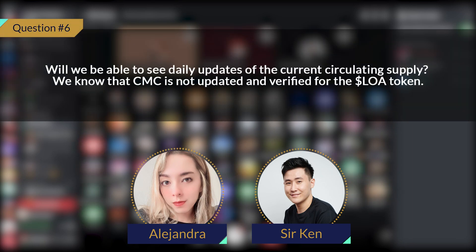Will we be able to see daily updates of the current circulation supply? We know that CMC is not updated and verified for the LOA token. Yes, currently we are working on that — it will be in the next patch update. We are going to be using the CoinGecko platform for our reference, as the circulating supply there is the most accurate. You guys can have a look at CoinGecko; it's about 91 million LOA tokens right now. In the future, when the patch update is released, you'll be able to see the circulating supply in the treasury pool.